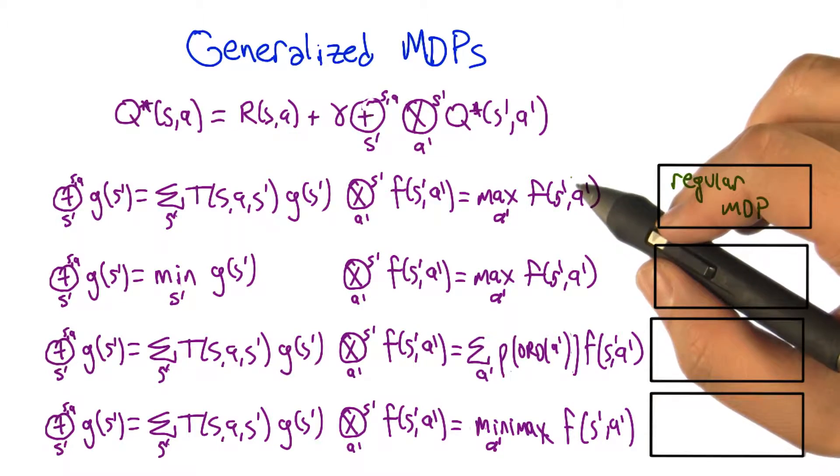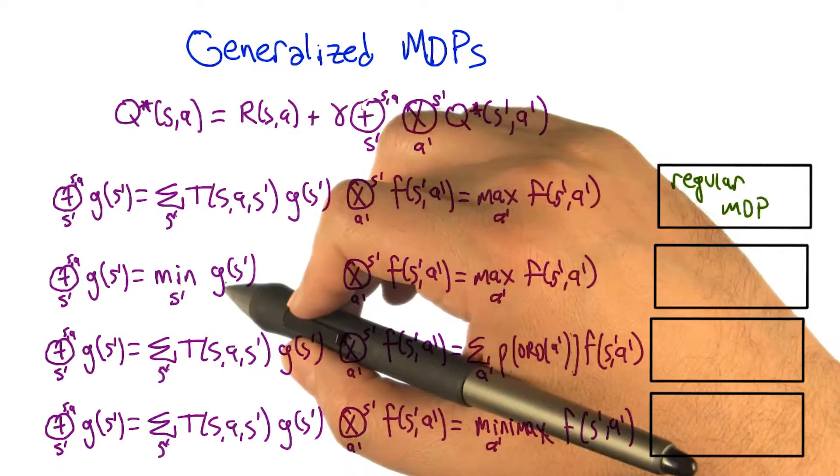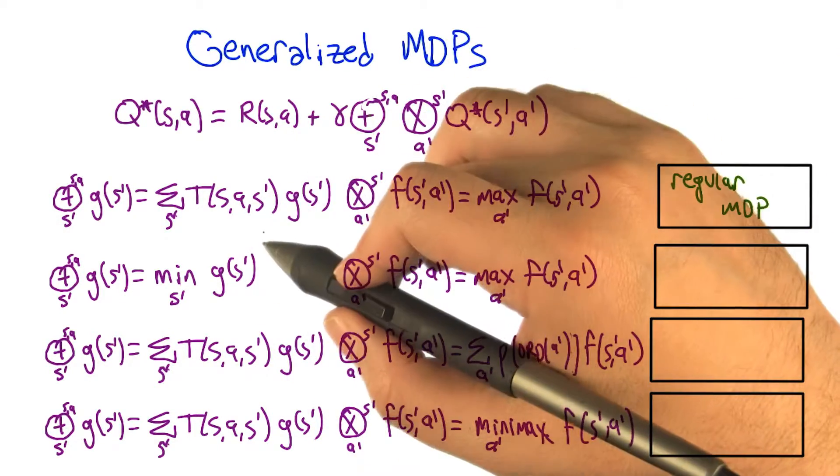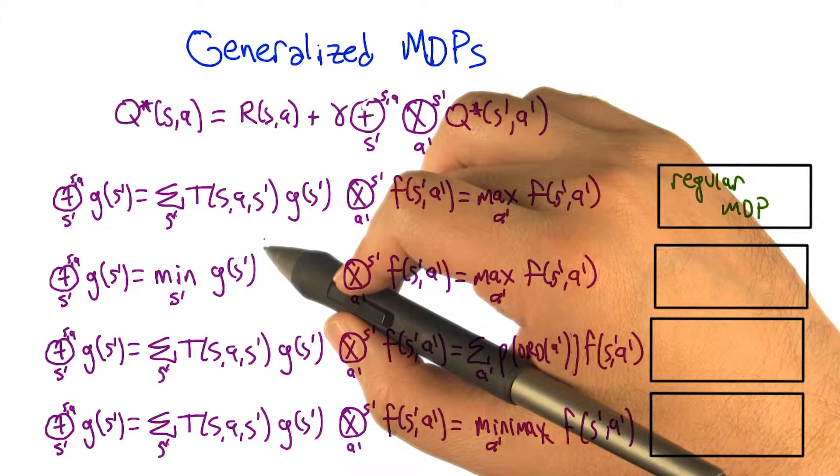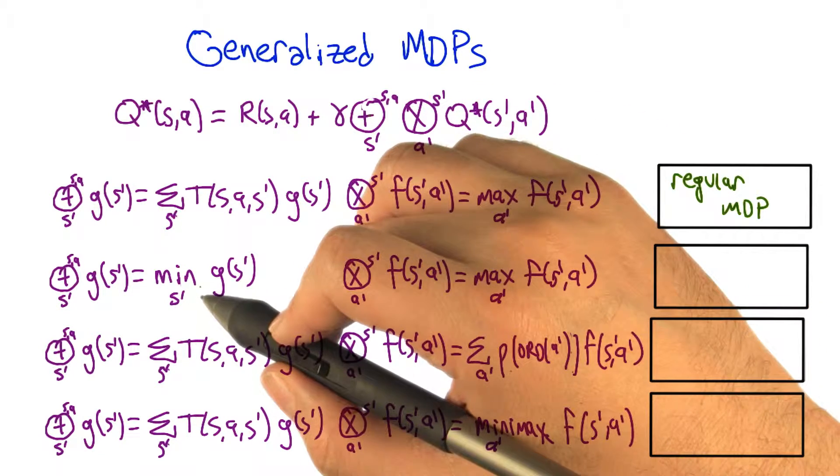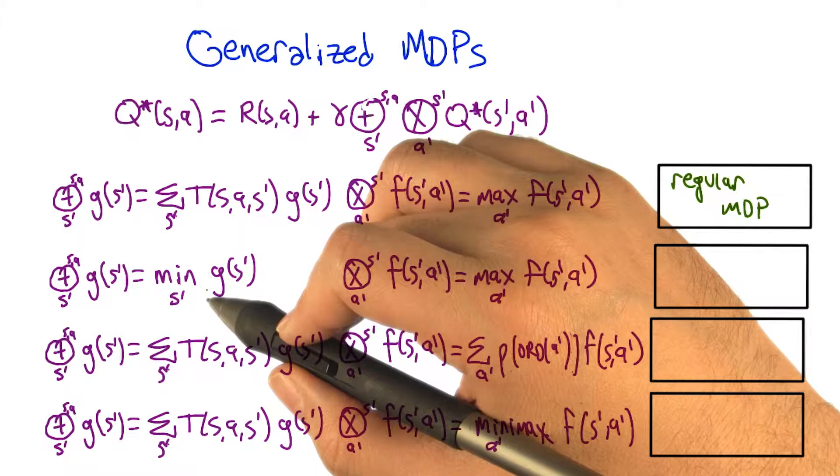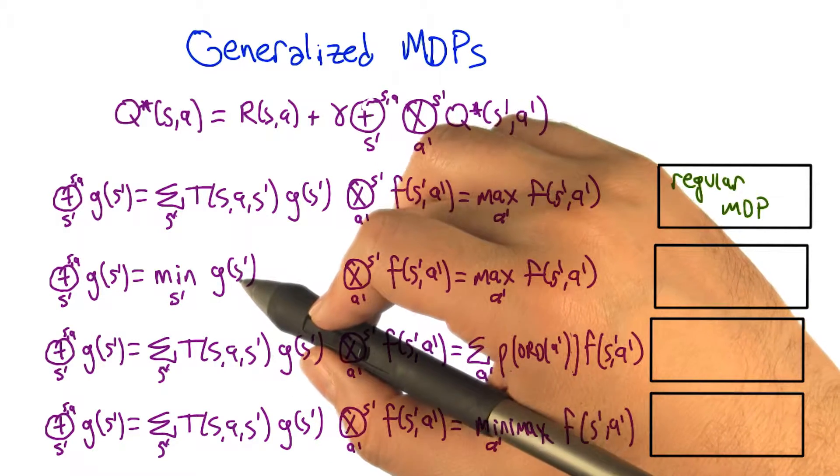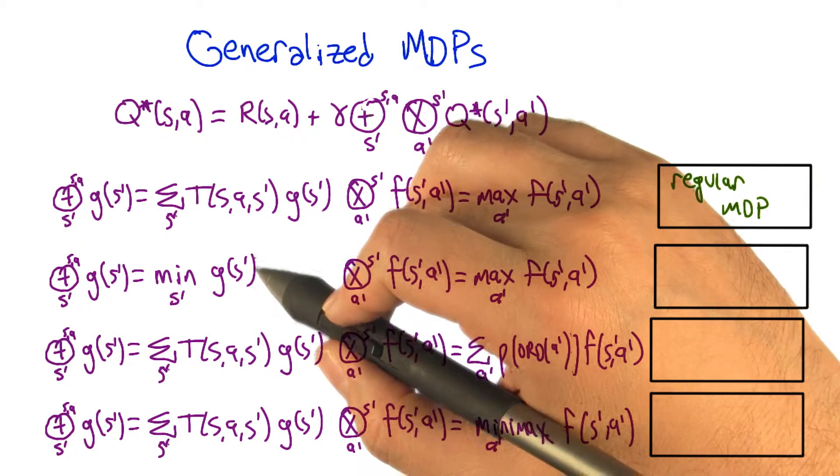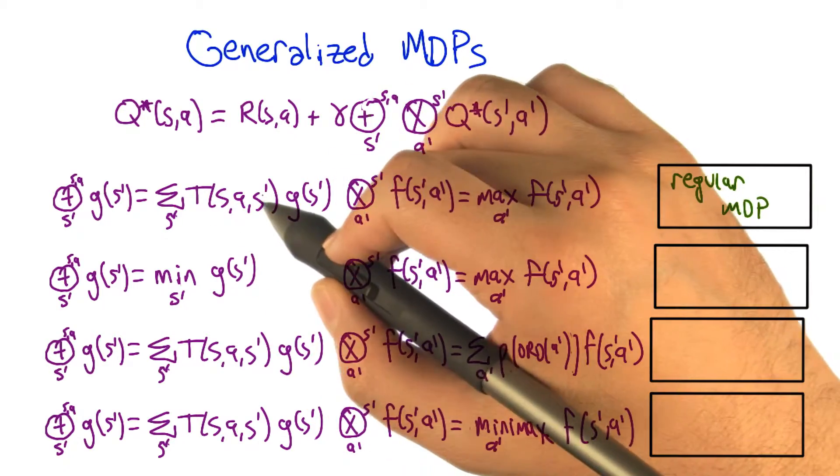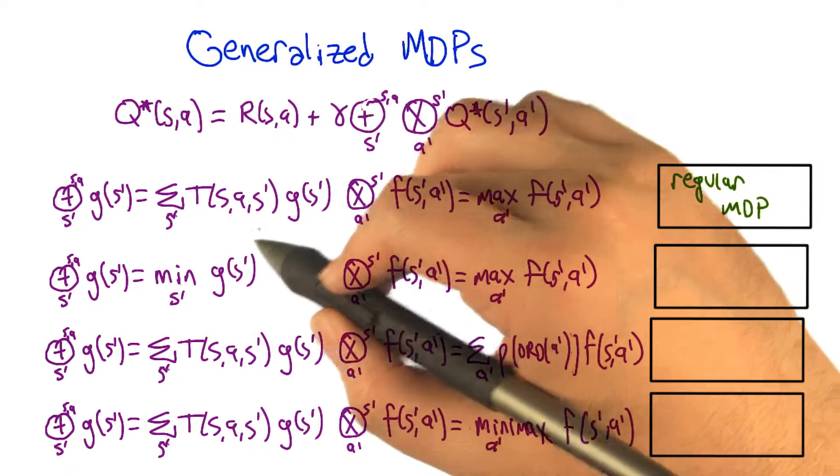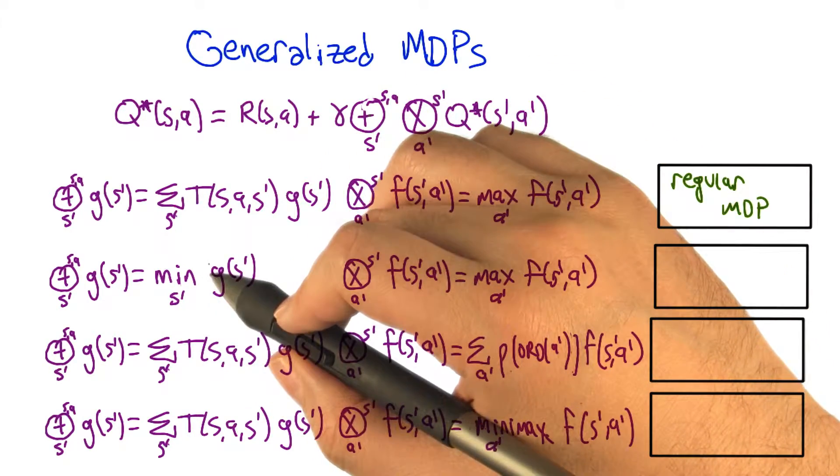So here the only difference between the second one and the first one is that instead of doing an expectation, you're going to only pay attention to the worst possible state you could get into. Okay, and so we're taking out the actual stochastic dynamics of the MDP and replacing it with something that is minimizing.